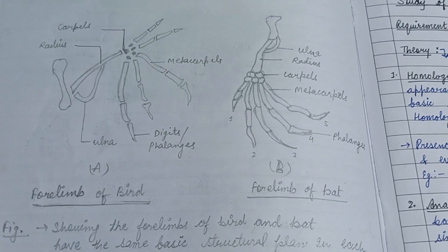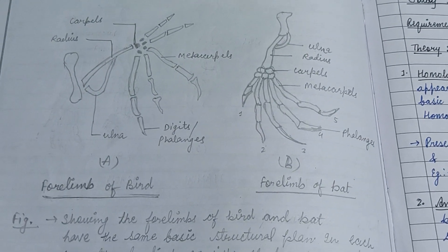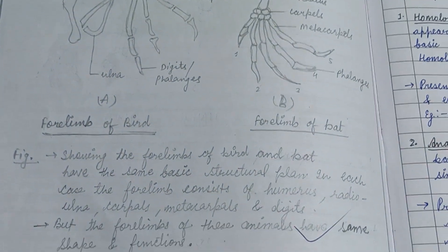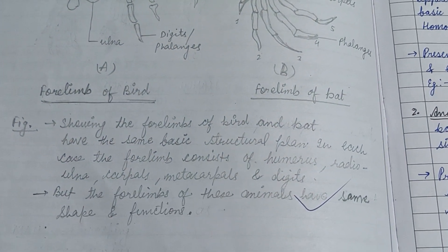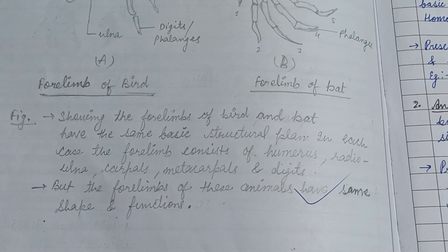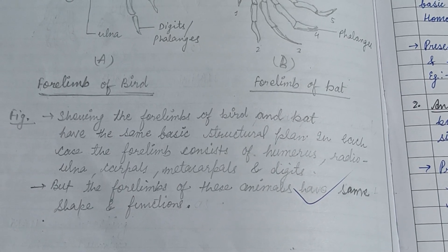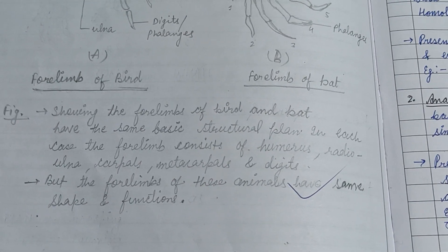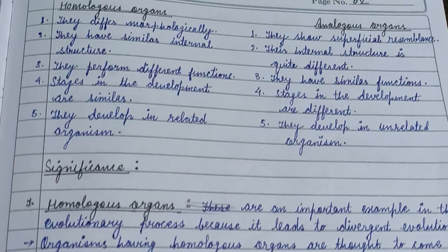In this figure, the forelimbs of a bird and the forelimbs of a bat show homologous organs. The forelimbs of birds and bats have the same basic structural plan — in each case the forelimbs consist of the humerus, radius, ulna, carpus, metacarpus, and digits — but the forelimbs of these animals differ in shape and function.